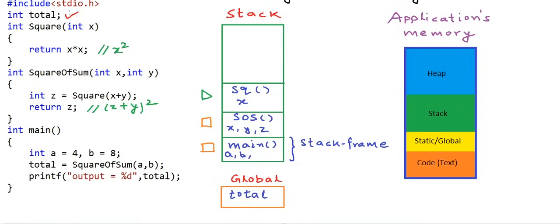This total is a global variable. It sits in this global variable section because it is not declared inside a function. We can access it anywhere. We go to this particular statement where we call square of sum, and square of sum is calling square. So right now, this is our call stack.